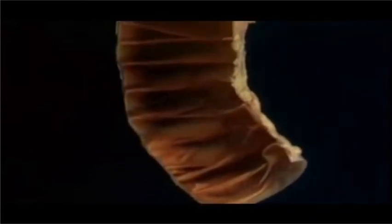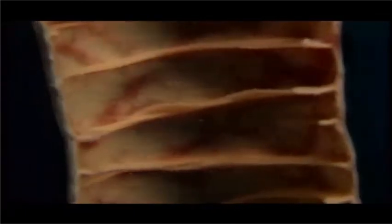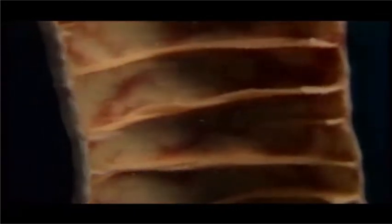Here's part of the jejunoileum that's been divided longitudinally. The mucosal lining is thrown into folds that project into the lumen. The folds are more pronounced here in the jejunum than in the ileum. Seen in close-up, the mucosal surface is a carpet of minute projections — villi — which vastly increase its absorptive surface area.